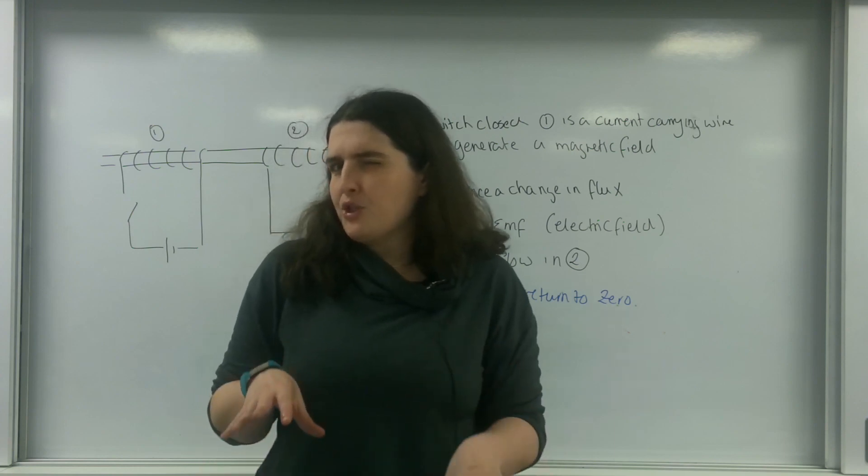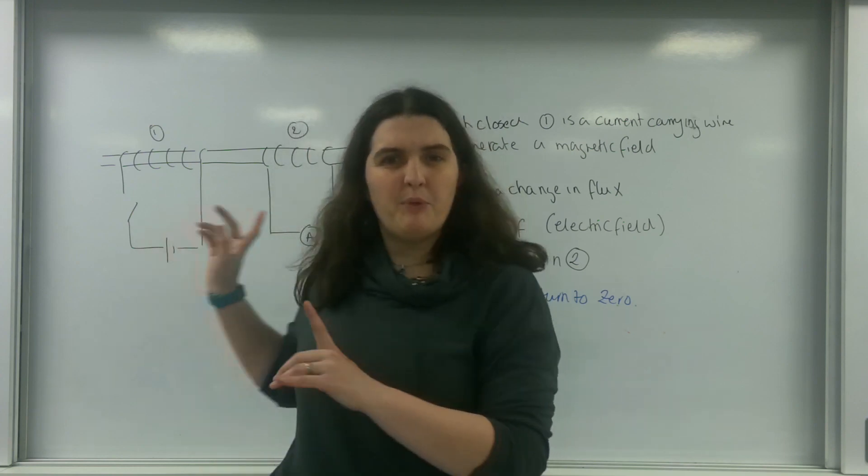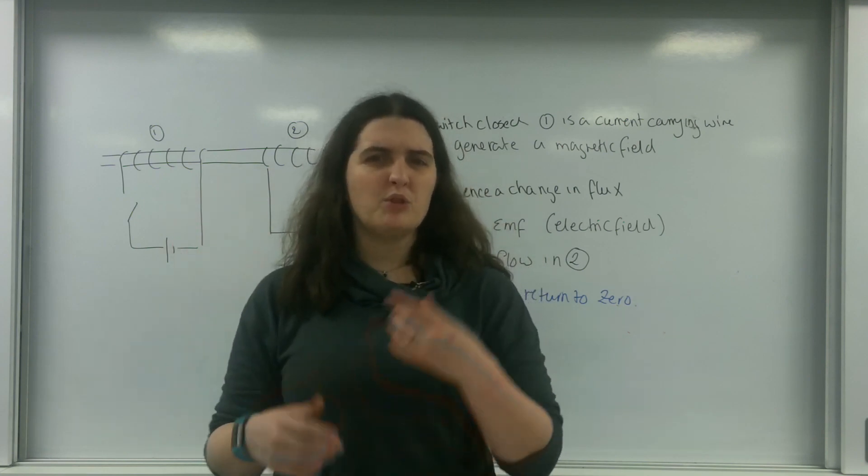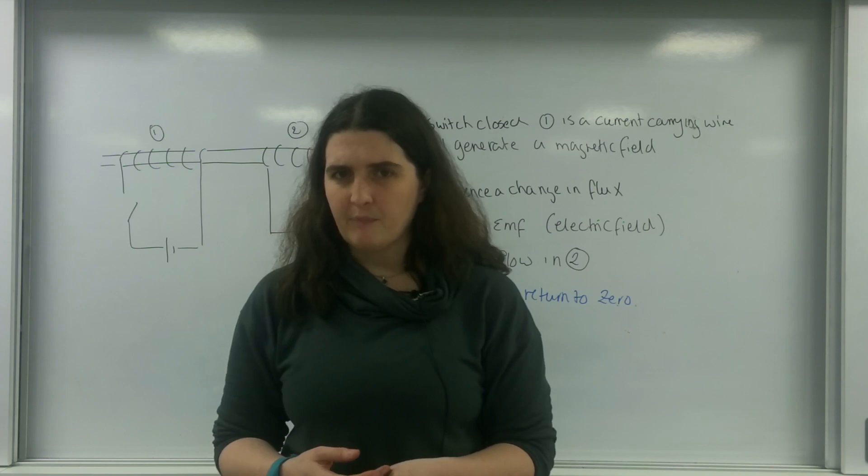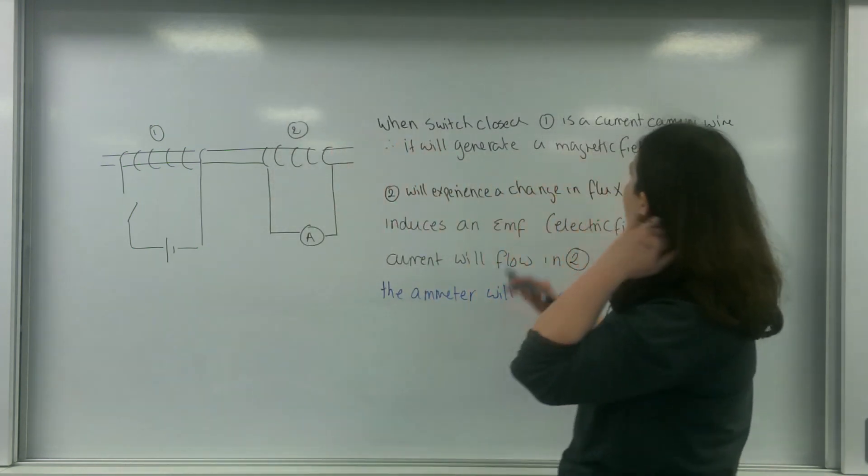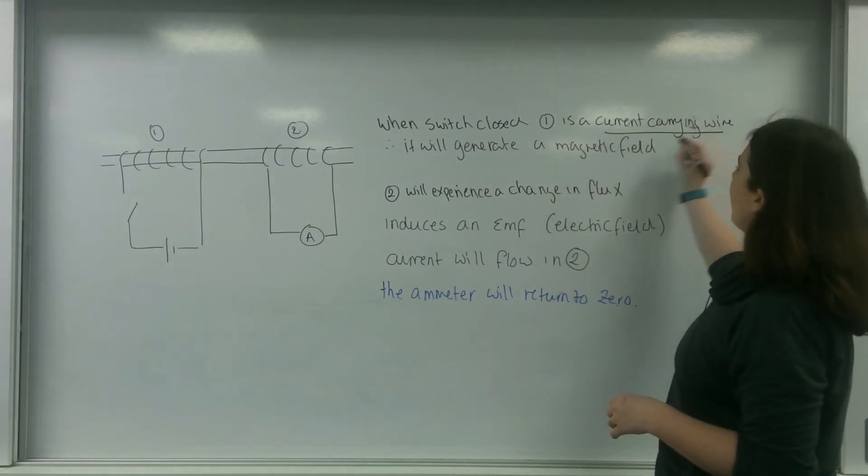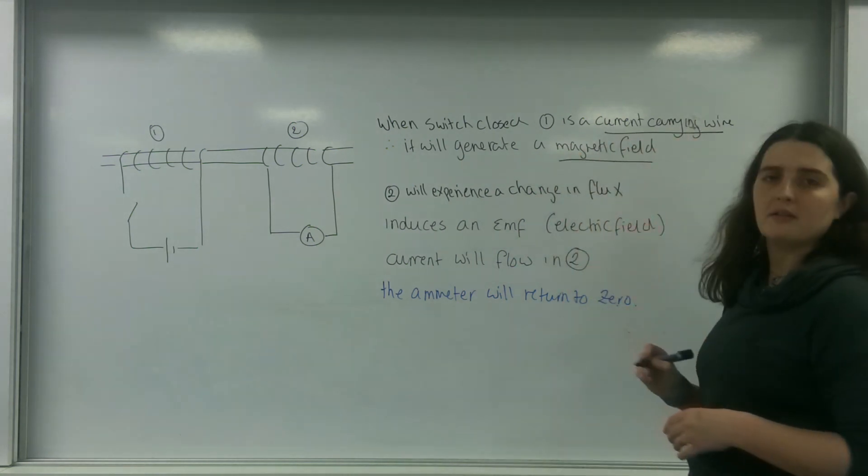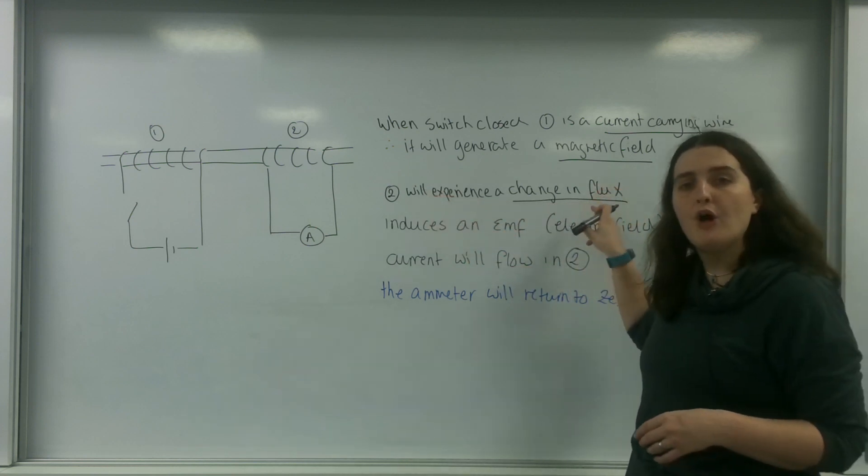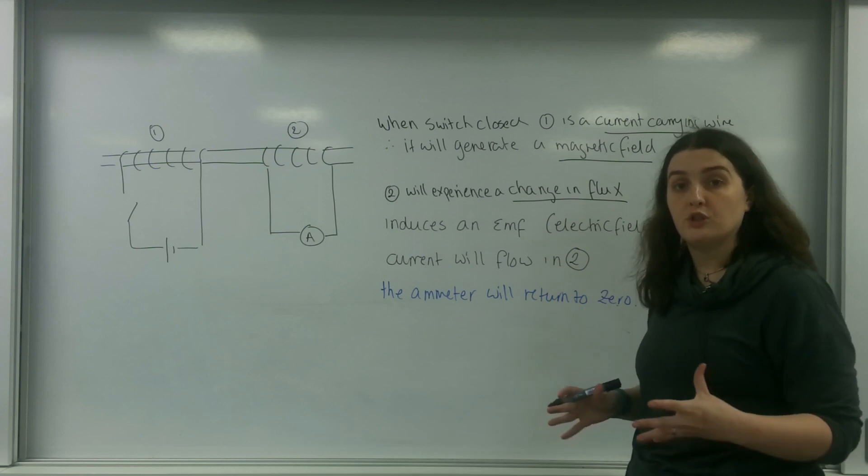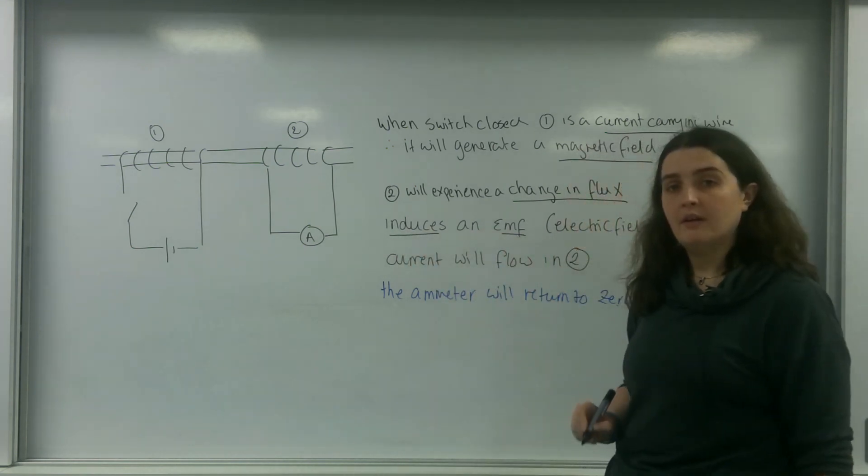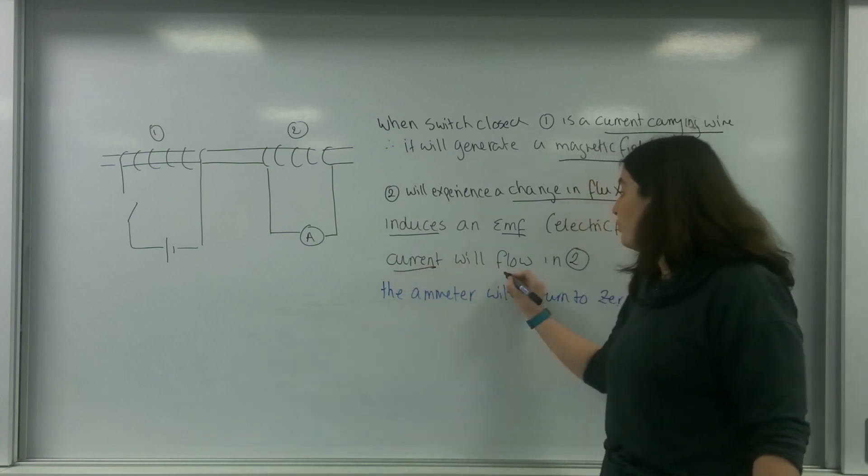Individual questions have individual comments, like for example, this one will mention that it will go back to zero, or a disc brake might want to talk about slowing the car down. But to get the majority of the marks, the examiner wants to see that you understand that a current carrying wire has a magnetic field. That the other wire experiences a change in flux, and that word is important. Those words are important. The idea that it induces an EMF, and that then current will flow.